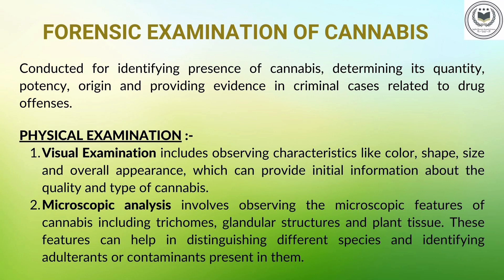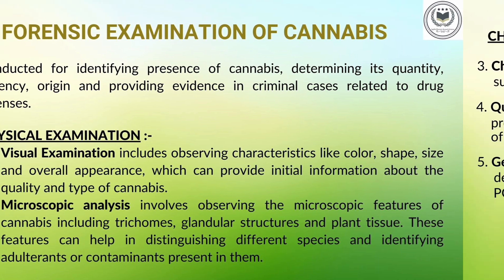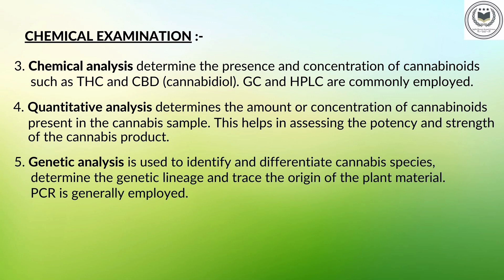Cannabis examination includes the following steps: physical examination and chemical examination. In physical examination, there is visual and microscopic examination. In visual examination, we note down the morphological features of cannabis including its shape, size, color, etc., which helps in determination of the type of species present. In microscopic analysis, we observe the specimen under a microscope and note down the granular structures, plant tissues, and number of trichomes present. This helps in determining the specific variety of cannabis and whether any adulterant is present.